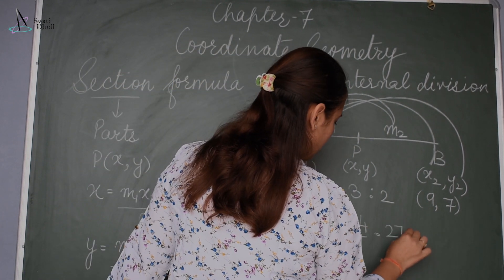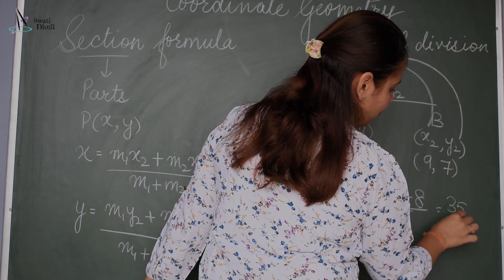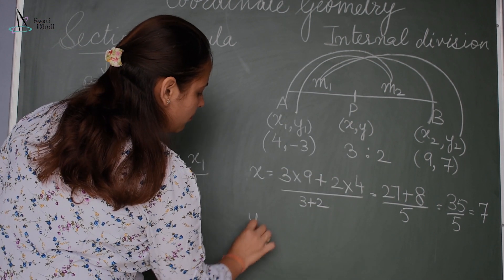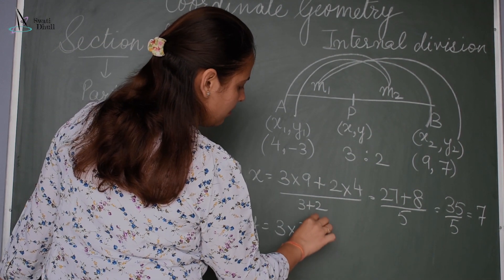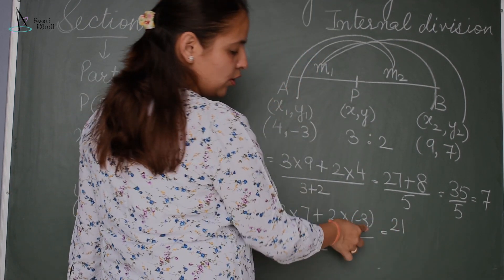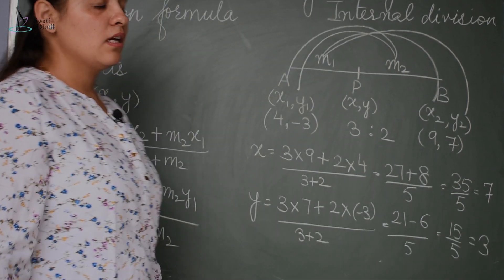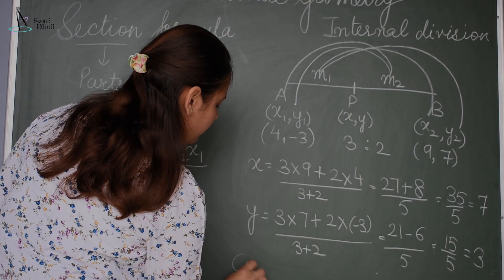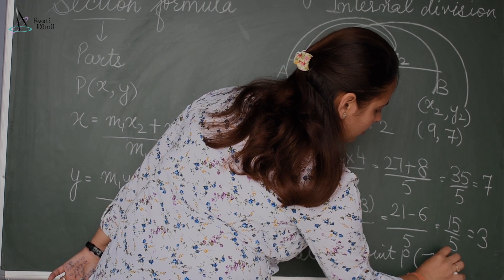So x = (27 + 8) / 5 = 35/5 = 7. That is the x-coordinate of point P. Now for the y-coordinate: y = (m1·y2 + m2·y1) / (m1 + m2) = (3×7 + 2×(−3)) / 5 = (21 − 6) / 5 = 15/5 = 3. So the coordinates of point P are (7, 3).